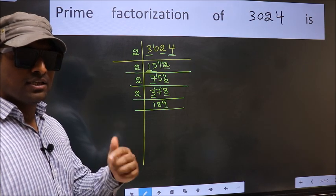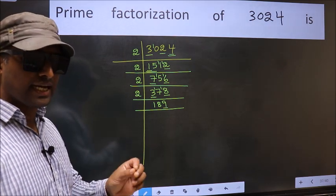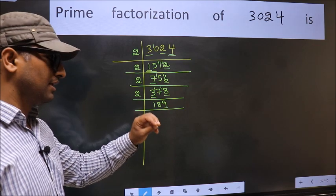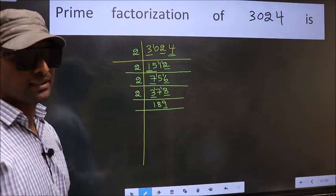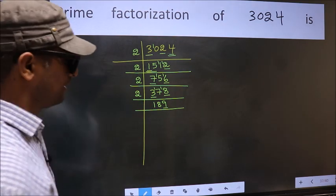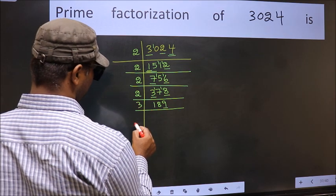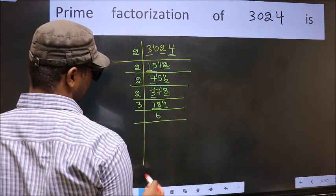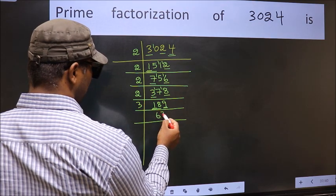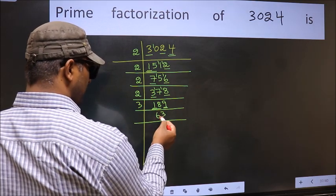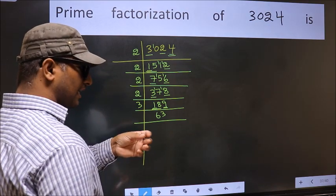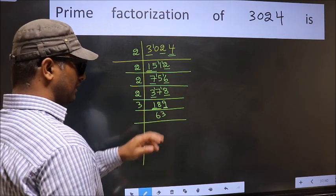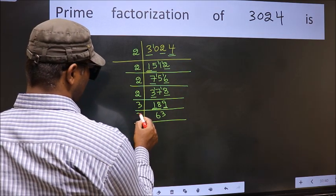Next prime number 3. To check divisibility by 3, we should add the digits. 1 plus 8 plus 9 equals 18, and 18 is divisible by 3. So this number is also divisible by 3. So take 3 here. First number 1 is smaller than 3, so take 2 numbers: 18. When do we get 18 in the 3 table? 3 times 6 is 18. The other number 9 — when do we get 9 in the 3 table? 3 times 3 is 9.